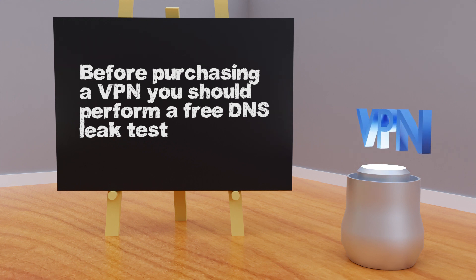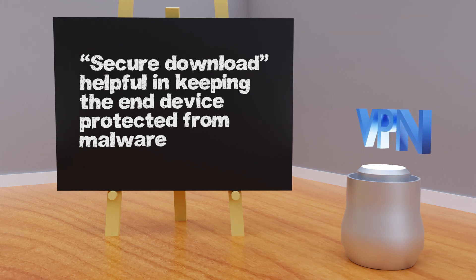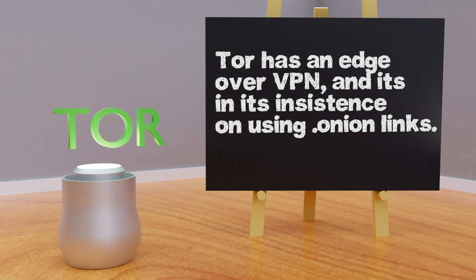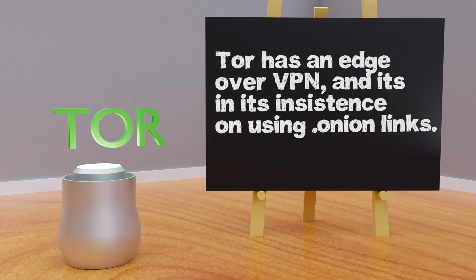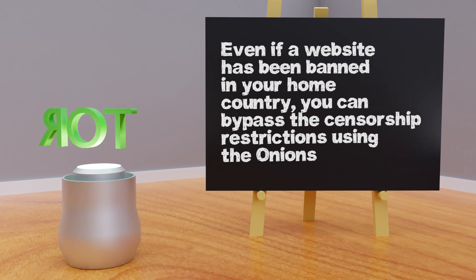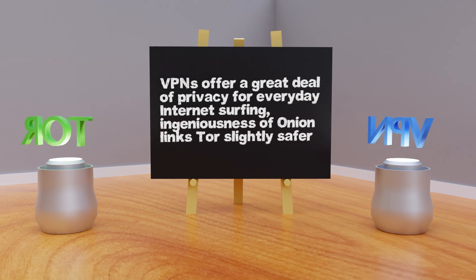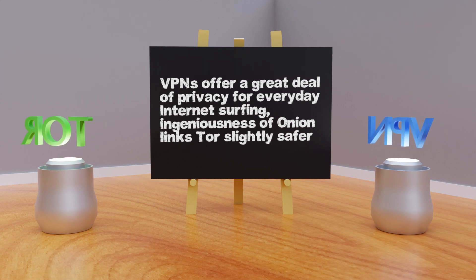Before purchasing a VPN solution you should always perform a free DNS leak test. Many VPNs also use features like secure download, which is helpful in keeping the end device protected from malware. However, Tor has one edge over VPN in its insistence on using .onion links. The Tor browser prioritizes and opens a website's .onion link when available, giving you access to a more private and secure version of the site. This way, even if a website has been banned in your home country, you can bypass censorship using onion services. A Tor browser with onion links is one of the best ways to defeat censorship and government surveillance, making Tor slightly safer for absolute last-mile data transfer.